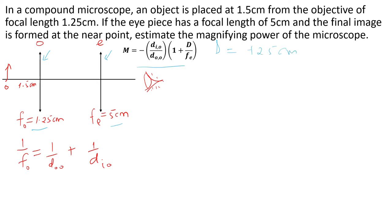We know that 1/f = 1/d_object + 1/d_image. For the objective lens system: 1/1.25 = 1/1.5 + 1/d_image for the objective. This gives us the image distance for the objective lens as 7.5 cm.